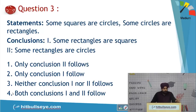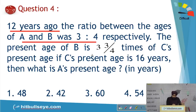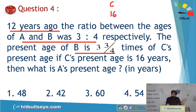There is also a solo question you can try on your own and check the answer later. Moving on, this next question is on ratio and ages. It states that 12 years ago A and B had a certain ratio, and C's present age is 16 years.